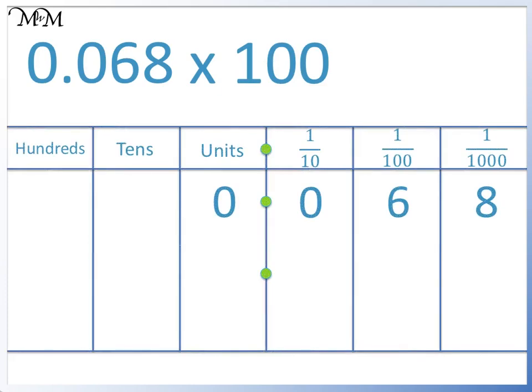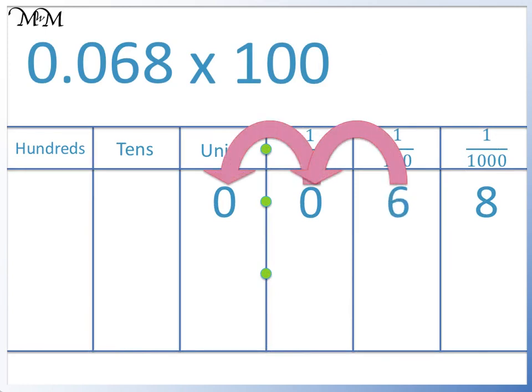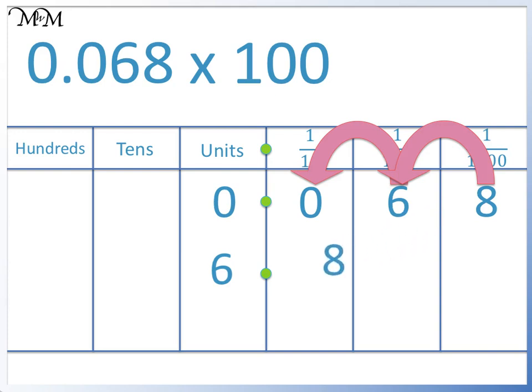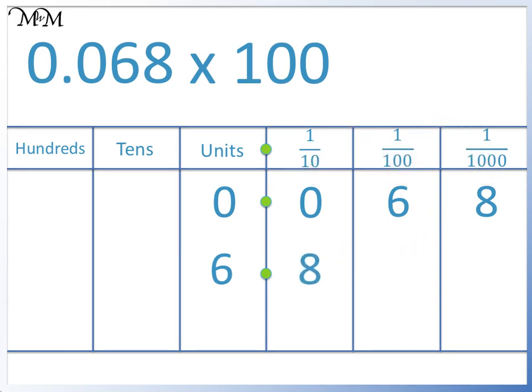0.068 times 100. We move the 6 two places to the left. Next we move the 8 two places to the left. 0.068 times 100 equals 6.8.